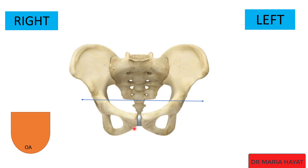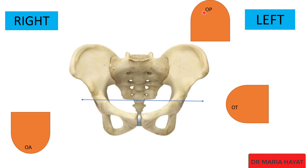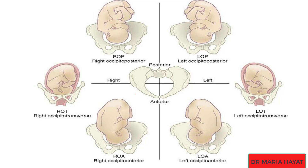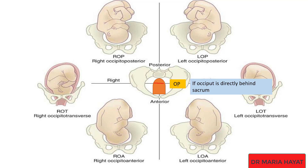Now we will talk about malposition. This is the right side of the maternal pelvis, this is the left side, this is the anterior side, and this is the posterior side. If the occiput is towards the anterior, it is a normal fetal position. If it is towards the posterior side of the maternal pelvis, it is called occiput posterior. If it is halfway between the anterior and the posterior, it is called occiput transverse. If the occiput is directly behind the maternal sacrum, it is called direct occiput posterior.